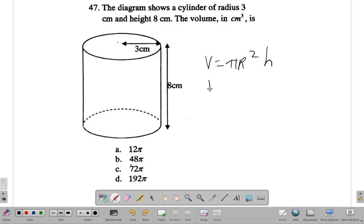So the volume here is pi times radius squared, 3 squared, times the height, which is pi times 9 times h. So the height is 8, so it's pi by 9 by 8, which is pi by 72, 72 pi.